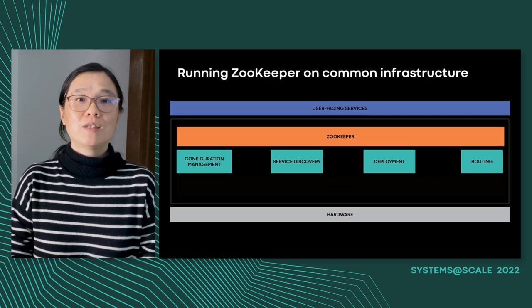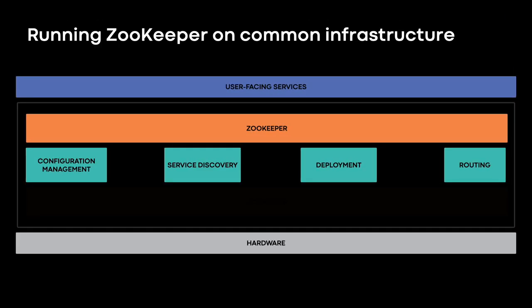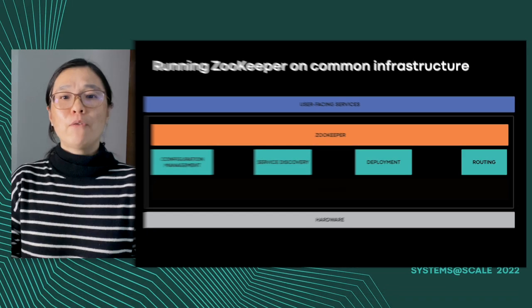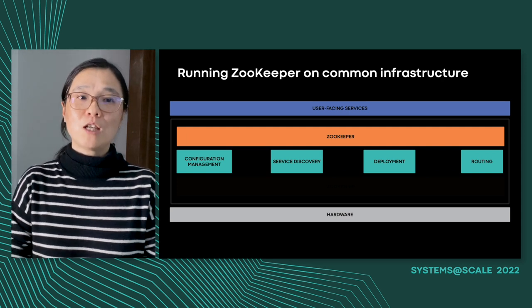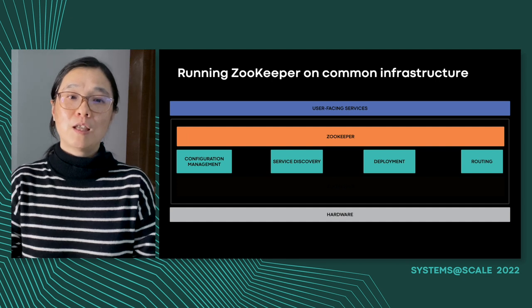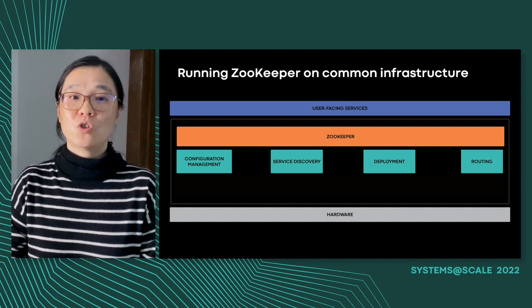At this point, we started to ask: maybe we can run ZooKeeper on top of some of the standard infrastructure built by dedicated teams — infrastructure that is well supported, well tested, and used by all the other teams at Meta. If we don't enforce zero dependency on ZooKeeper, what ZooKeeper requires is no different from other services. If we can run ZooKeeper on the common infrastructure, it would greatly reduce our surface area, improve stability, and let us focus just on ZooKeeper.